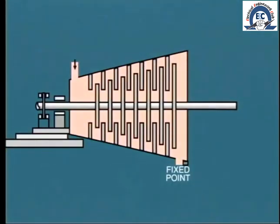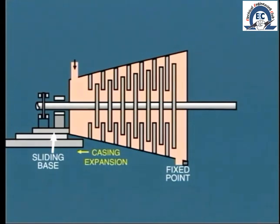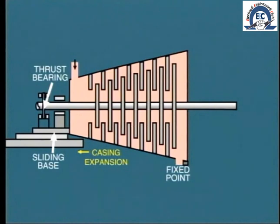We have already seen how the turbine construction allows for the shell to expand axially, usually on sliding feet at the governor pedestal. Now, while this is happening, the rotor is expanding but in the opposite direction. Remember, the high pressure end of the rotor is secured by the thrust bearing.